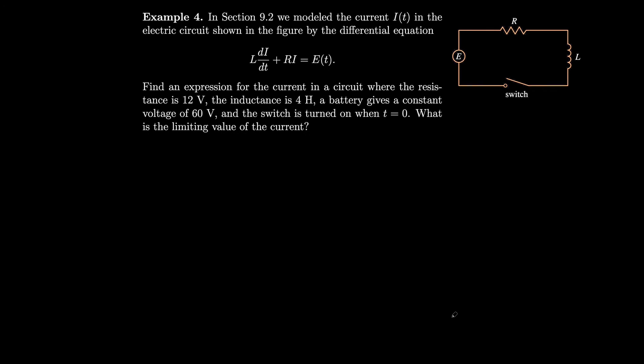In section 9.2 we modeled the current i(t) in an electric circuit by the differential equation L times di/dt plus R times i equals E(t). Here the resistance is 12 ohms, the inductance is 4 henrys, and a battery gives a constant voltage of 60 volts, with the switch turned on at t = 0. So L = 4, R = 12, and E(t) = 60.